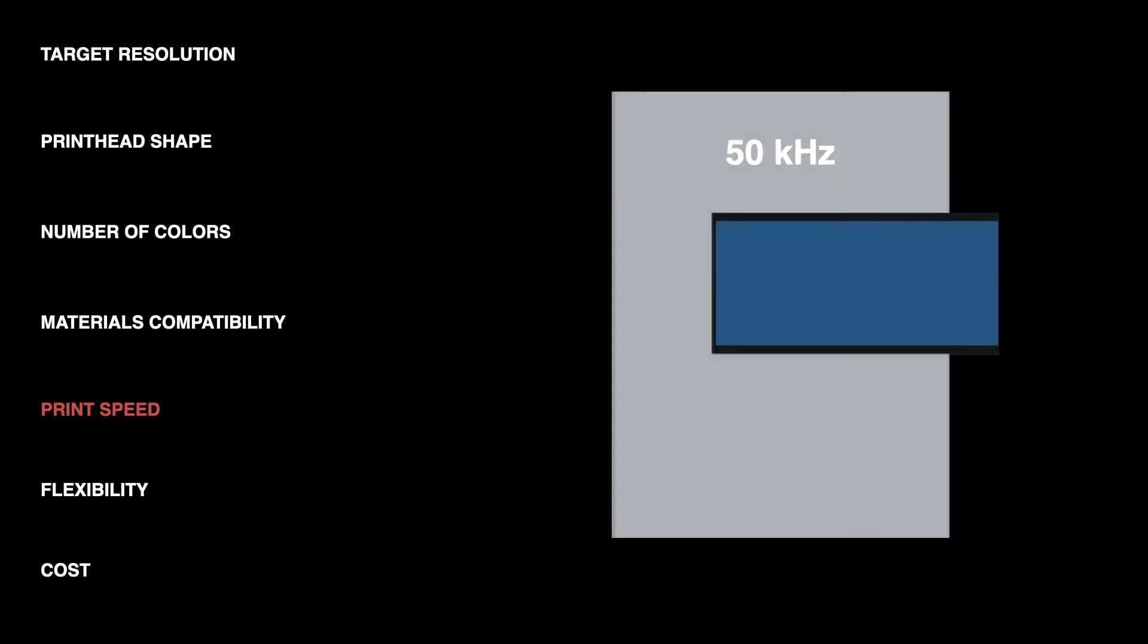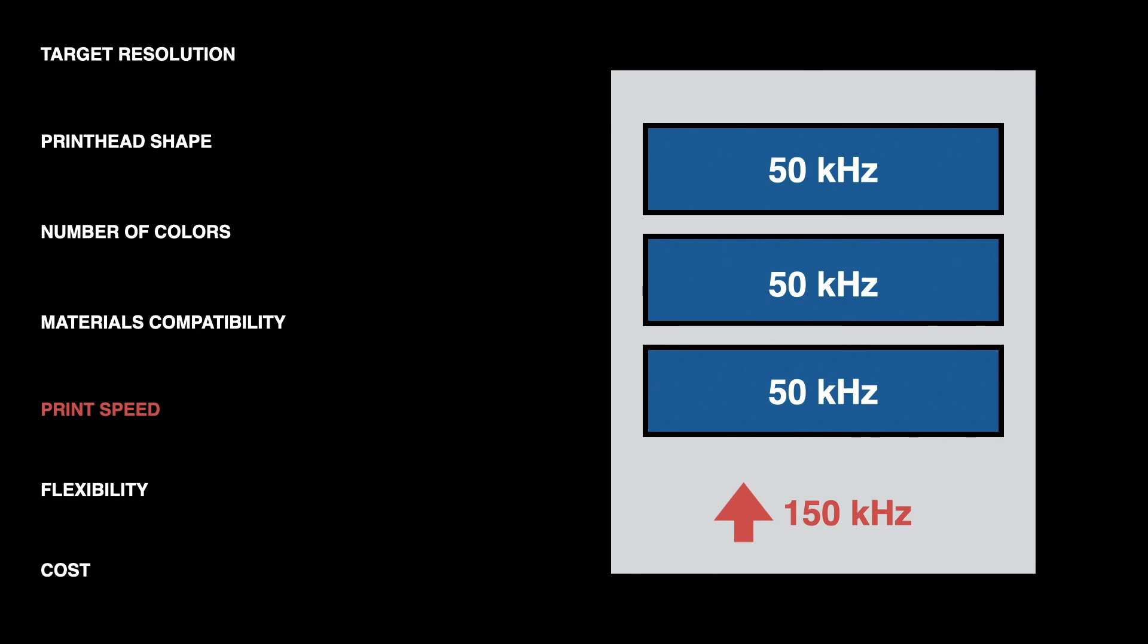If you run that calculation and you determine that you need to print at a frequency that's higher than any printhead can handle, that's a situation where you could benefit from using multiple heads in a row. If you need 150,000 drops per second to cover the area that you need, you can try to find a printhead that can go 150,000 drops per second or you could stack three 50s in a row and if you align them properly it will have the same effect. Again with alignment and ink supplies and drive electronics you do want to try to minimize the number of heads but in some cases if you're trying to go really really fast this is the only way to do it.